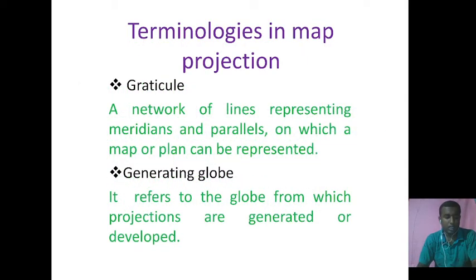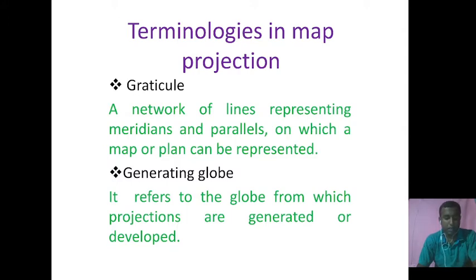Map projection is a device by which the curved surface of the earth is represented on a flat plane. The operational process essentially involves dimensional transformation — that is, a two-dimensional representation of the three-dimensional figure of the earth. This process produces deformations which are inevitable because the surface of the generating globe and the surface or plane of projection are not geometrically applicable.